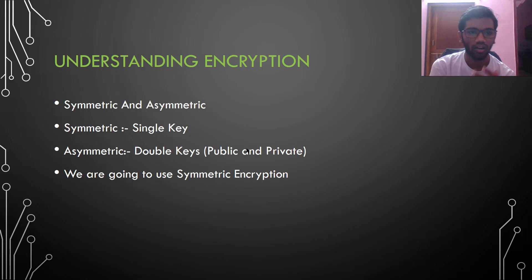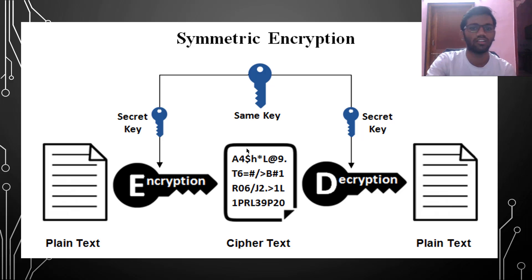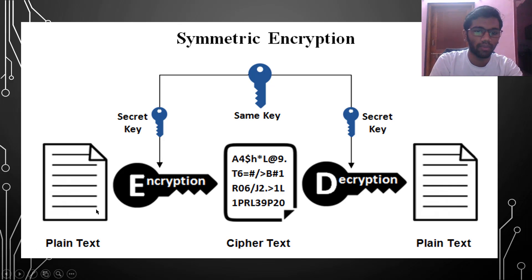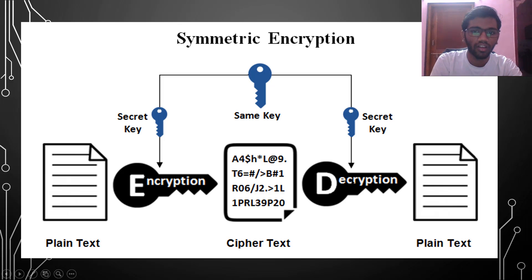Encryption is of two types: symmetric and asymmetric. In symmetric encryption, there is only a single key — one key for encrypting the data and also for decrypting the data. As you can see in the image, I have my plain text, I encrypt it with a secret key, and I use that same secret key to decrypt it as well. This is how basic symmetric encryption works.